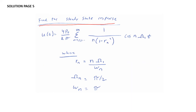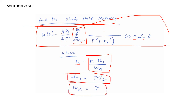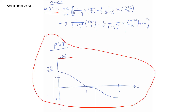Finally, we find the steady-state response u(t). We have u(t) = (4p-naught)/(kπ) · Σ[n=1,3,5,...] (1/n) · 1/(1 − rₙ²) · cos(nω₁t), where rₙ = nω₁/ωₙ, ω₁ = π/2, and ωₙ = π. Plotting u(t) versus t for each successive term n = 1, 3, 5, 7, ... gives us our final steady-state response plot.